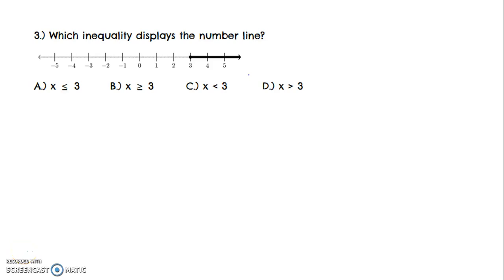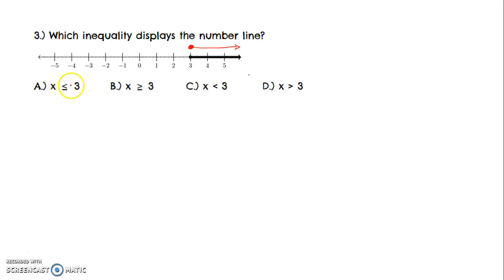This video is to help you with number 3 on CR Helper number 28. It says which inequality displays the number line. They give you a number line with a shaded circle on the 3, and an arrow going to the right. They want to know which statement represents this. So we want to make sure you know what these symbols mean.